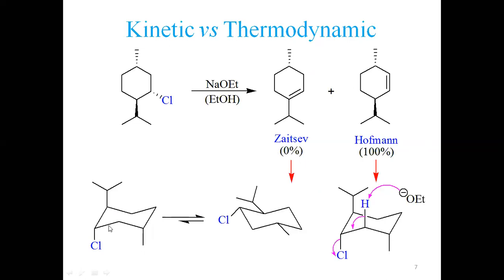For anti elimination to occur in cyclohexane, both the leaving group and the hydrogen being removed must be axial — i.e., 180 degrees to each other (anti-periplanar). In the conformation where this requirement is met, the axial hydrogen on the adjacent carbon and the axial chlorine are anti-periplanar, so elimination gives the Hofmann product. In the other chair, chlorine is equatorial and cannot undergo elimination, having less than 1% probability.